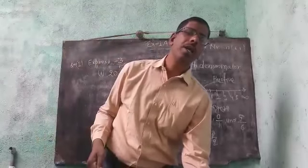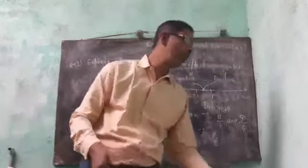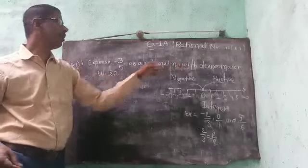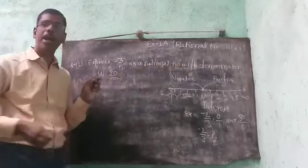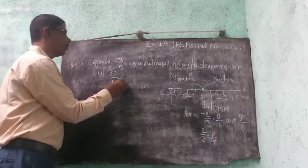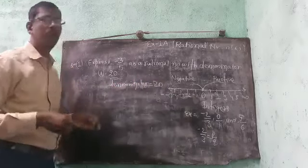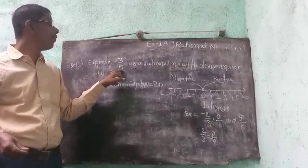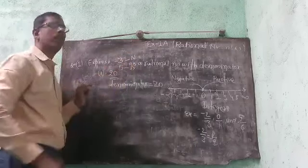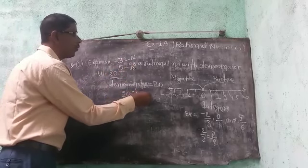Now, first question: Express minus 3 by 5 as a rational number with denominator 20. To convert denominator 5 to 20, we calculate 20 divided by 5 equals 4. So we multiply both numerator and denominator by 4: minus 3 by 5 equals minus 12 by 20.